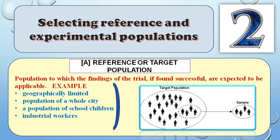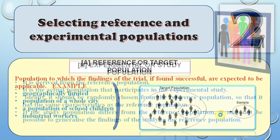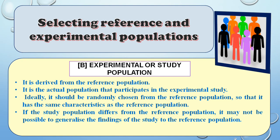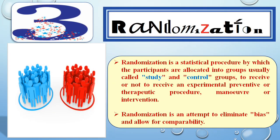The reference population — for example, all school children — is the target population. From it, a smaller experimental or sample population is selected depending on the study objective and sample size. The actual experiment happens within this sample population derived from the reference population.